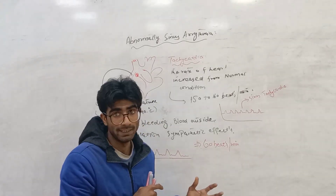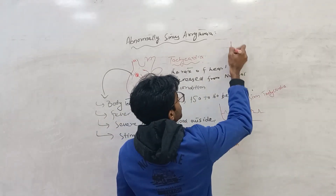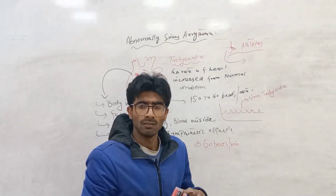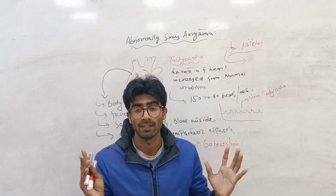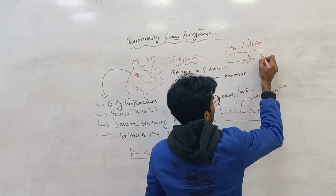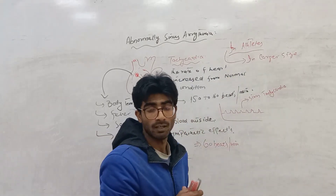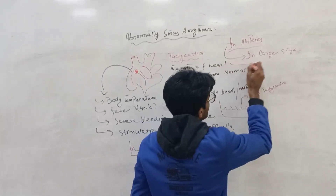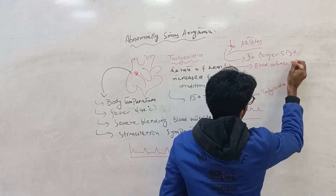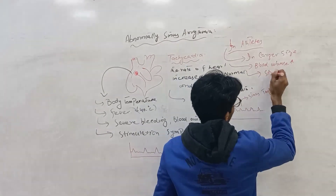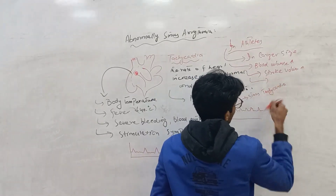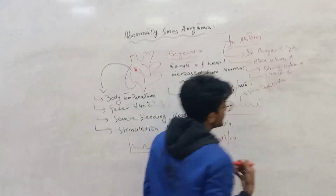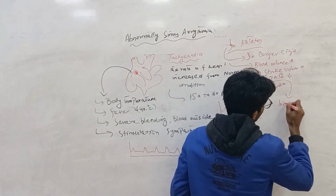In athletes, the heart is mostly larger in size. Why do they have a larger heart? Because they exercise daily, the blood volume of the heart increases, and stroke volume also increases. This can impact the rate of the heart, causing the rate to decrease. The rate of heart decreases due to the high amount of blood in the arteries and vessels.